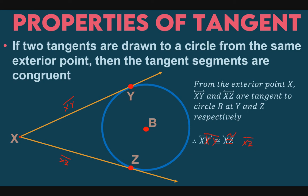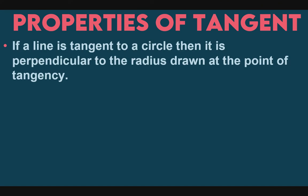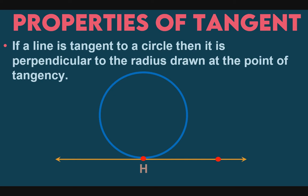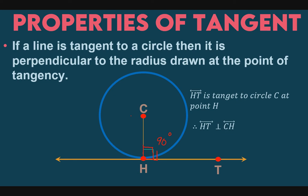Next property of a tangent: if a line is tangent to a circle, then it is perpendicular to the radius drawn to the point of tangency. So if we have a circle with center C and a tangent line HT, with point of tangency H, then the radius CH is perpendicular to line HT. This means the angle formed between them is 90 degrees. Therefore, line HT is perpendicular to segment CH.